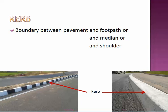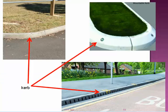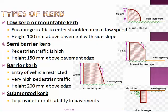The fifth element of highway cross-section is the curb. The curb is the boundary between the footpath, median, or shoulders. There are four types of curbs. The first is a low curb or mountable curb — the height is very less, about 100 mm, so vehicles can mount over it. In a semi-barrier type, the height is 150 mm above the pavement surface and vehicles are allowed to enter only under emergency conditions. In a barrier curb, vehicle entry is completely restricted and the height is as high as 200 mm. In a submerged curb, it is provided below the carriageway, usually to provide lateral stability of pavements.